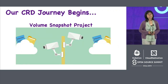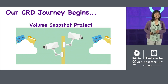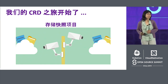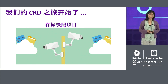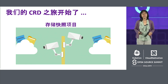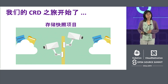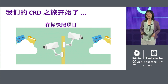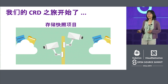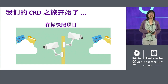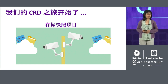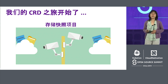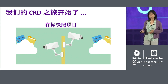Our journey starts about a year ago when SIG Storage started the Snapshot project. Storage is for storing data — it is important. You don't want to lose it, but things might happen: things might fail, data might be corrupted. So Snapshot gives you an easy, quick way to recover your data. It's very much like taking a picture of your data, and later you can recover from that point.